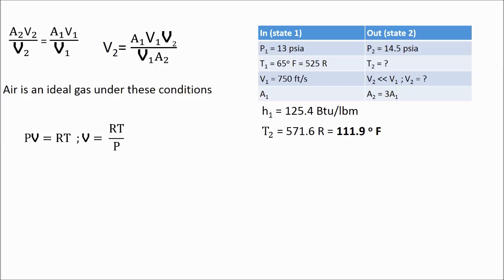Setting them equal gives for v2, the exit velocity, a1 times v1 times the specific volume at the exit over the specific volume at the entrance over a2.